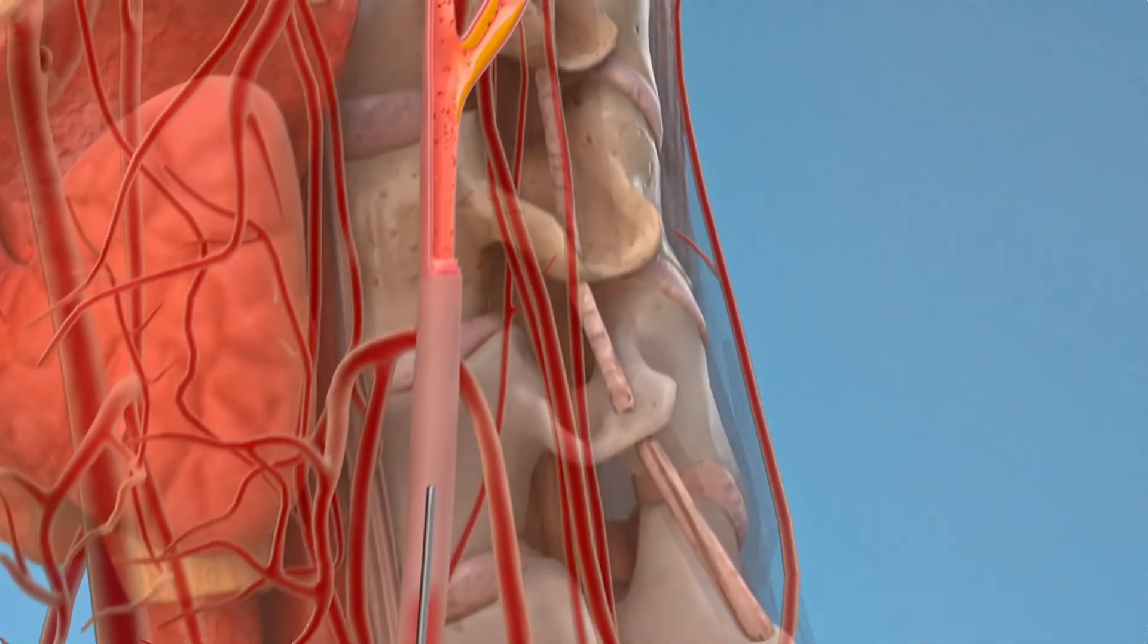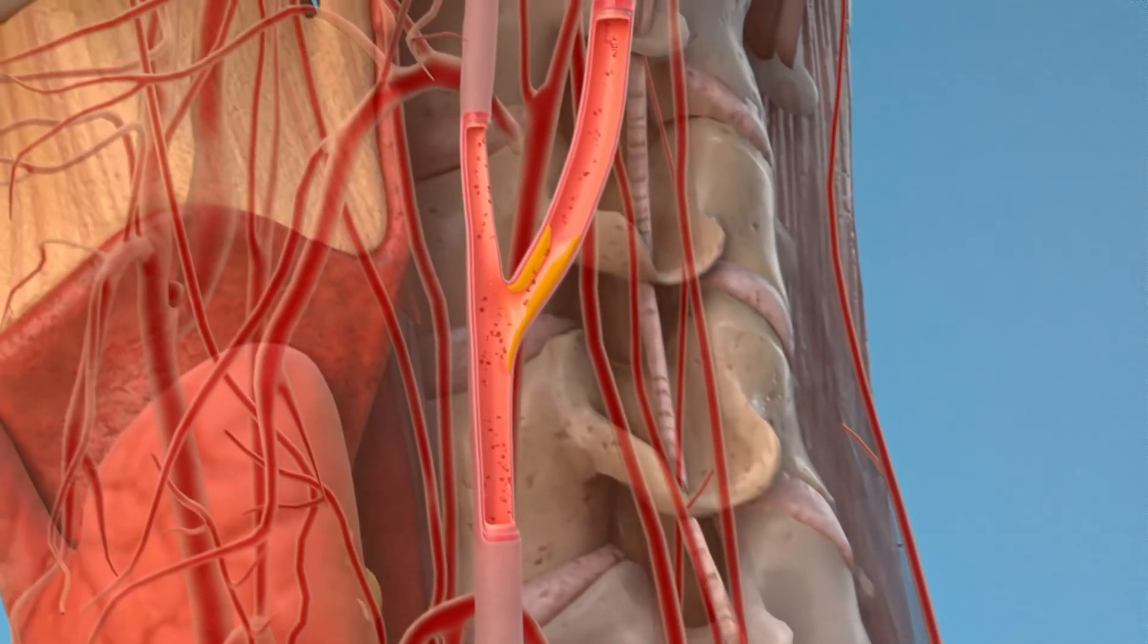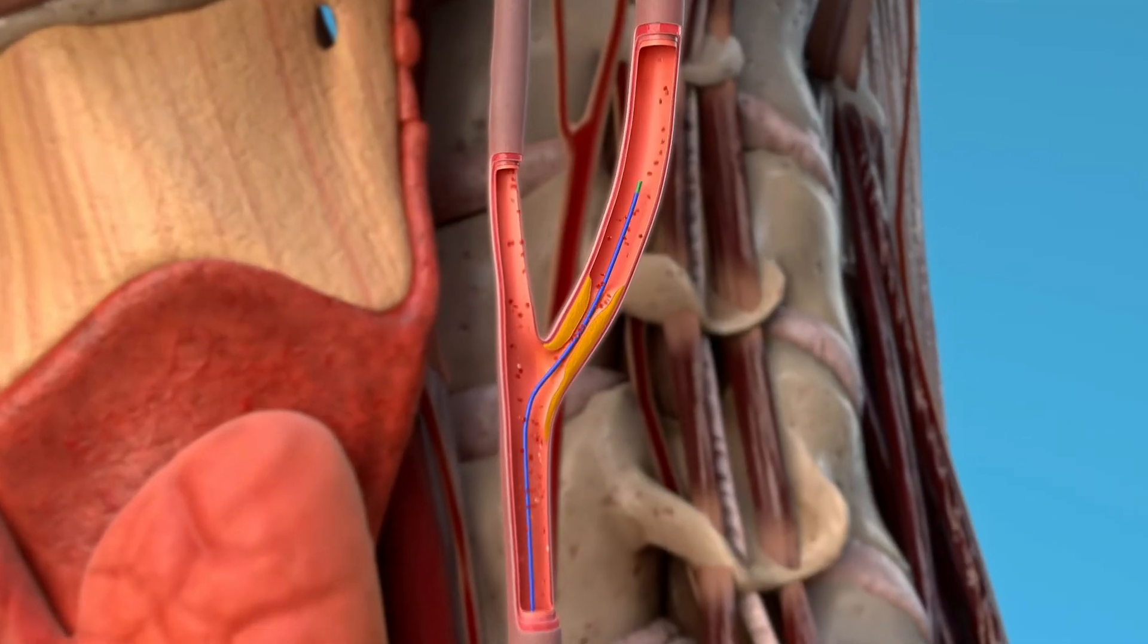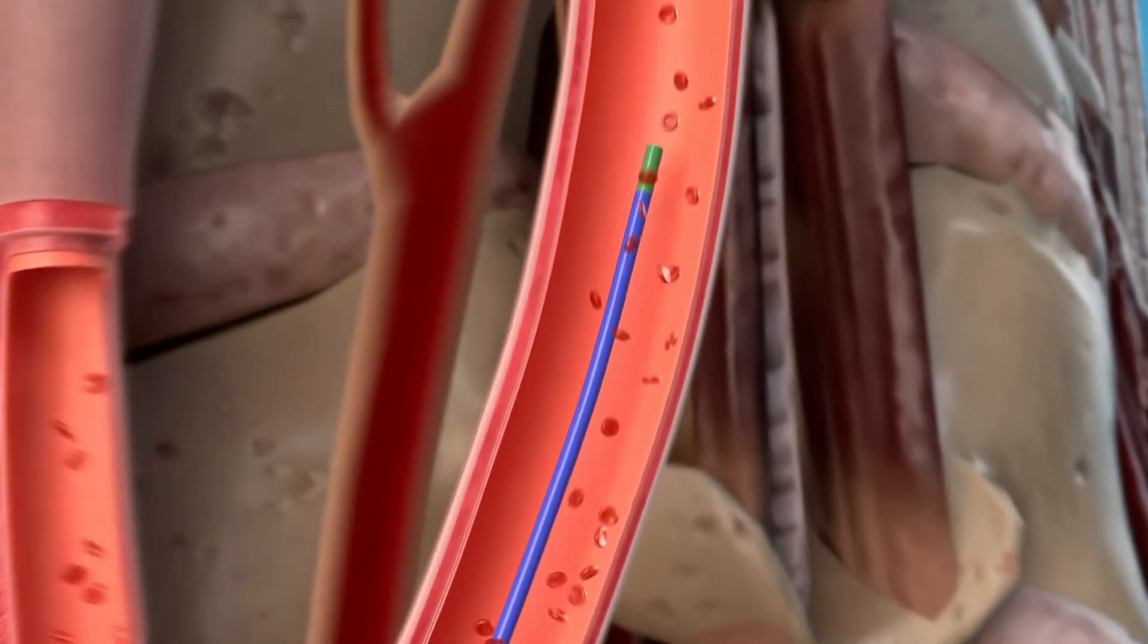After reaching the bifurcation of the left common carotid artery and passing the stenosis zone of the internal carotid artery, a filter trap is installed to prevent material embolism.